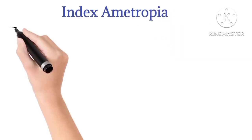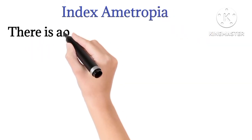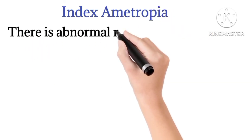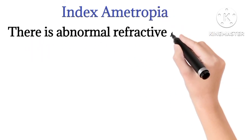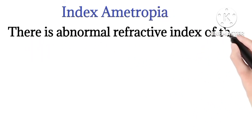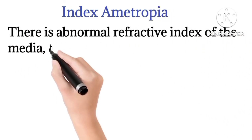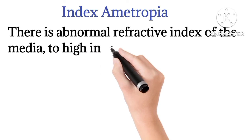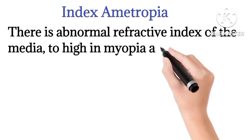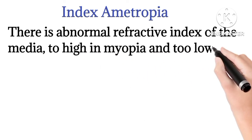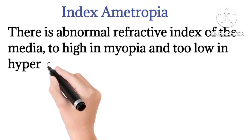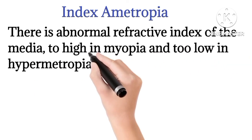The next one is index ametropia. There is an abnormal refractive index of the media — too high in myopia and too low in hypermetropia.